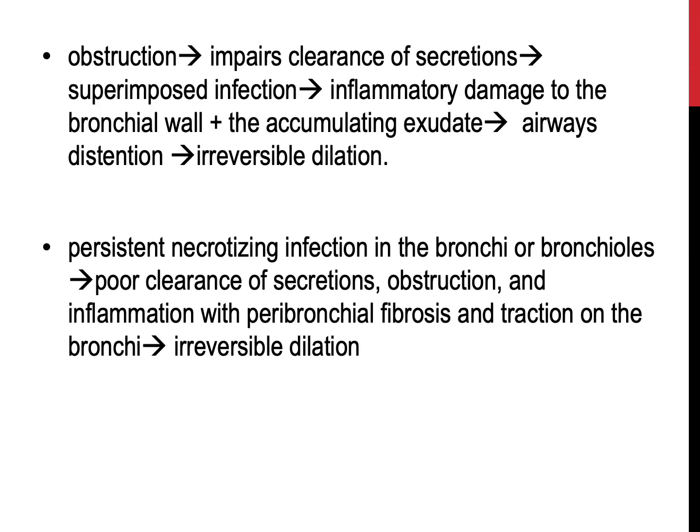Obstruction caused by a foreign body, for example, impairs the clearance of secretions, so secretions start to accumulate, providing a favorable medium for superimposed infection. The secretions and bronchial dilation result in tissue damage, especially to the bronchial wall, and accumulation of exudate, which further distends the airways, leading to irreversible dilation. Conversely, a persistent necrotizing infection in the bronchi or bronchioles may lead to poor clearance of secretions, followed by obstruction and bronchial wall damage, resulting again in full-blown bronchiectasis.